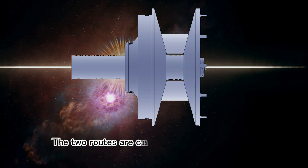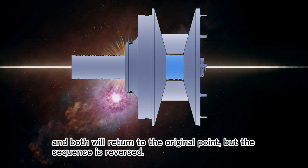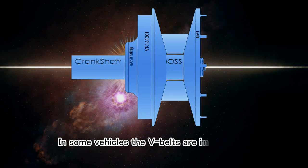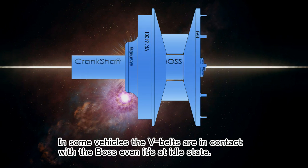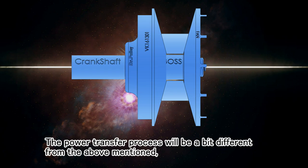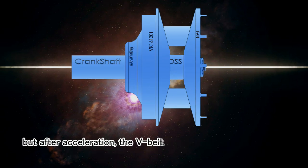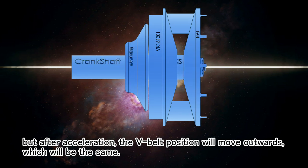The two routes are carried out at the same time and both will return to the original point, but the sequence is reversed. In some vehicles, the V-belts are in contact with the boss even at idle state. The power transfer process will be a bit different from the above mentioned, but after acceleration the V-belt position will move outwards, which will be the same.